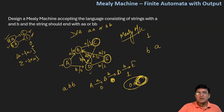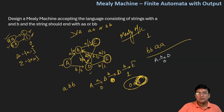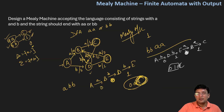Let's take another example: BBAA. Starting at state A, if we get B, we move to state D and produce output zero. From D, if we get another B, we move to state E and produce output one. Then if A comes, we move to state B and produce output zero. At state B, if we get symbol A, we go to state C and produce output one. So the output is 0, 1, 0, 1 — the last digit is one, meaning the string is ending with either AA or BB.